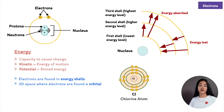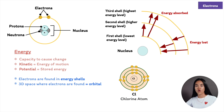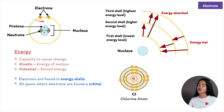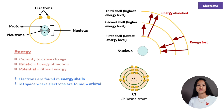Before we move on to constructing the periodic table of the elements, let's quickly summarize. Subatomic particles include protons, neutrons, and electrons. Protons are positively charged, neutrons are electrically neutral, and these two particles are found in the nucleus. Electrons are negatively charged and are found in regions of space around the nucleus called orbitals, electron shells, or energy levels.